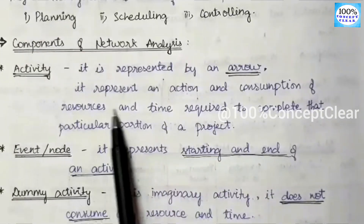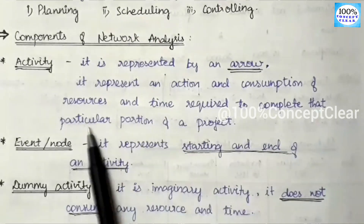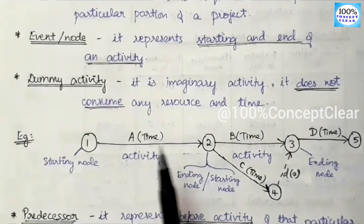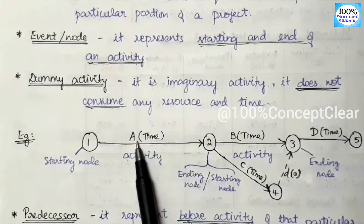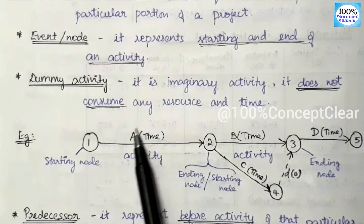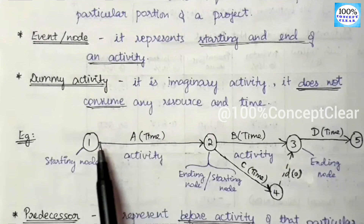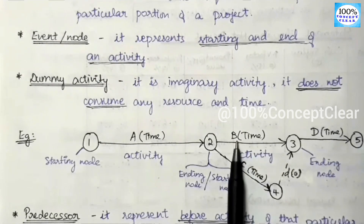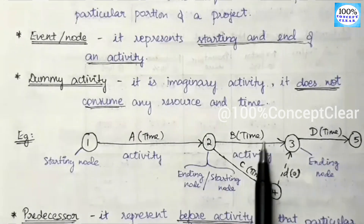An activity represents an action and the consumption of resources and time required to complete that particular portion of a project. The arrow mark represents the resources consumed and the time taken to complete that activity. Here, 'A' is the name of the activity, and within brackets we write the time required to complete it. Similarly, 'B' is another activity with its time mentioned.